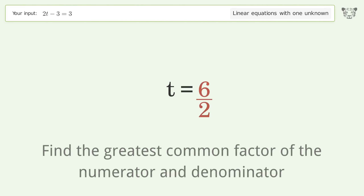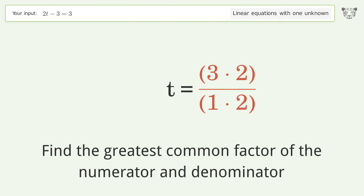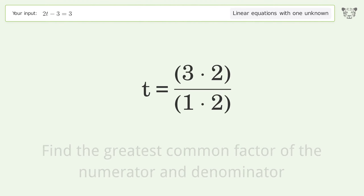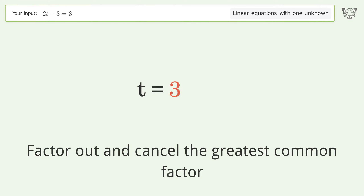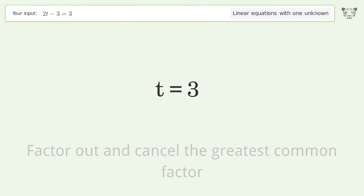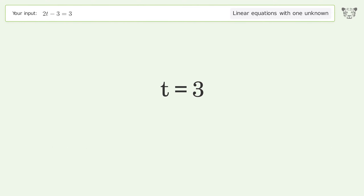Find the greatest common factor of the numerator and denominator. Factor out and cancel the greatest common factor. And so the final result is t equals 3.